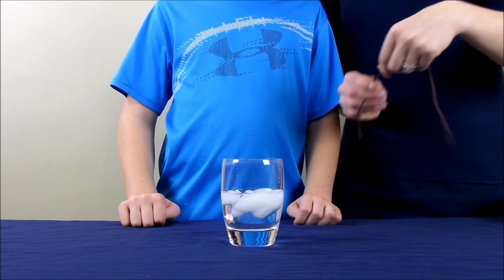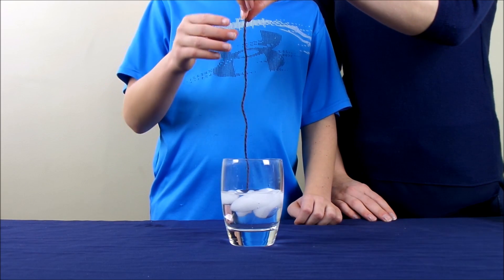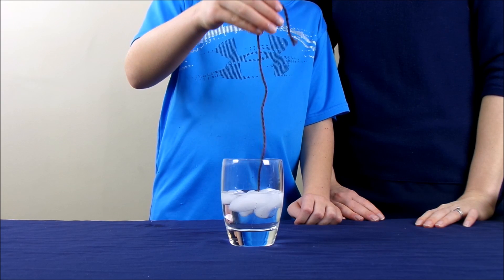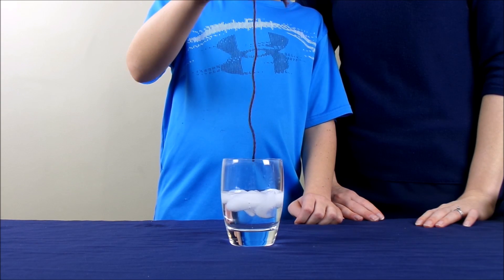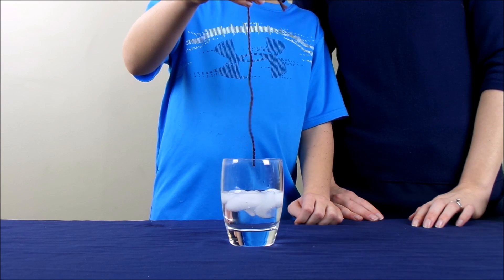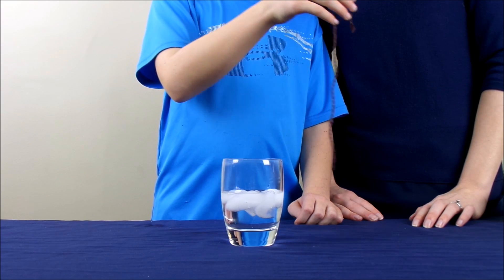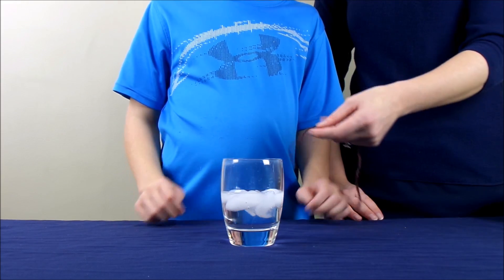Now we're going to take our string and I'm going to have my son try to pull out an ice cube using the string. As you can see, it's not possible unless we add another item. So what we're going to do now is lay the string across the ice. Go ahead and lay the string across the ice.